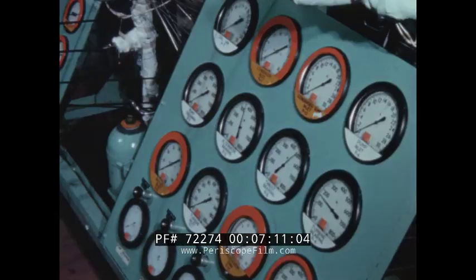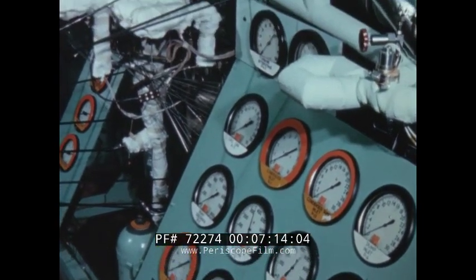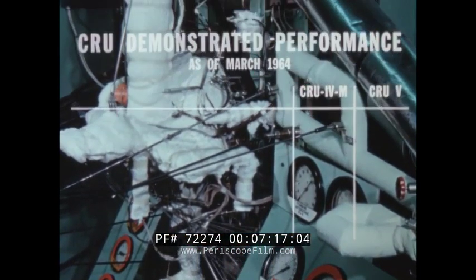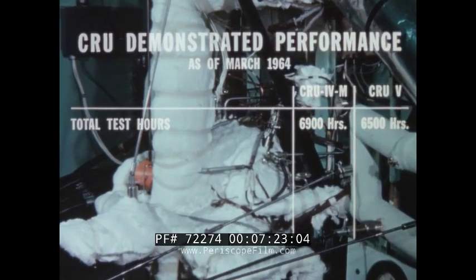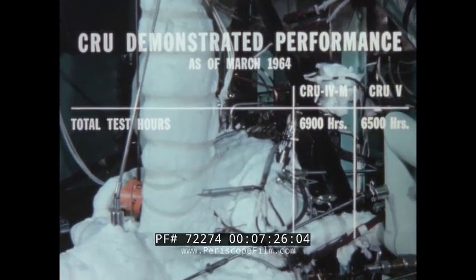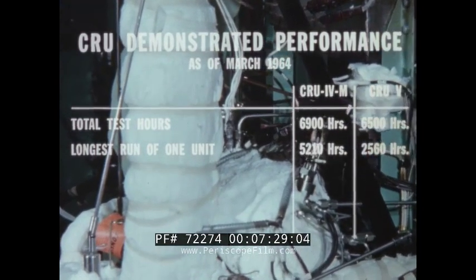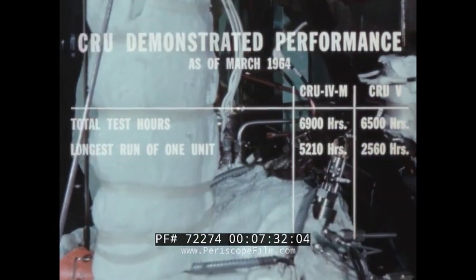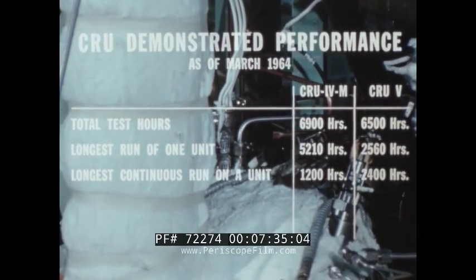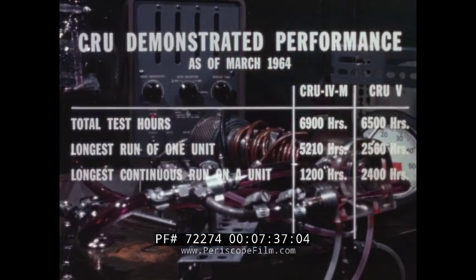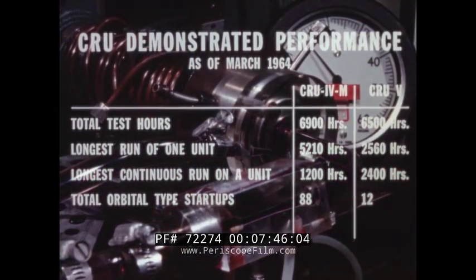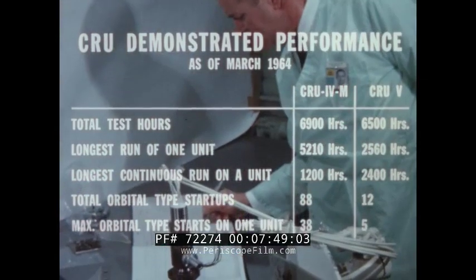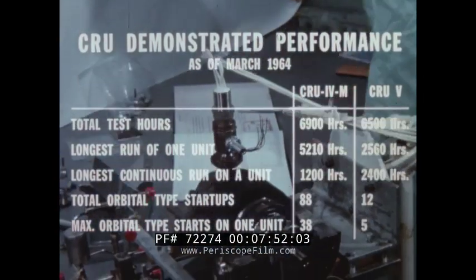These extensive feasibility and endurance demonstrations have yielded the following data for the CRU-4M and CRU-5 units respectively: total test hours, 6,900 and 6,500; longest run of one unit, 5,210 and 2,560 hours; longest continuous run on a unit, 1,200 and 2,400 hours; total orbital-type start-ups, 88 and 12; maximum orbital-type starts on one unit, 38 and 5.